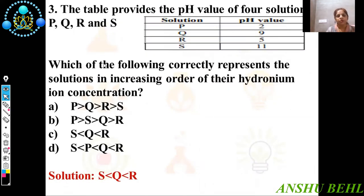Third question: The table provides the pH value of four solutions P, Q, R, S. Which of the following correctly represents the solutions in increasing order of hydronium ion concentration? The least value of hydronium ion is present in S, then Q, then R, then P. So the correct answer is S < Q < R < P.